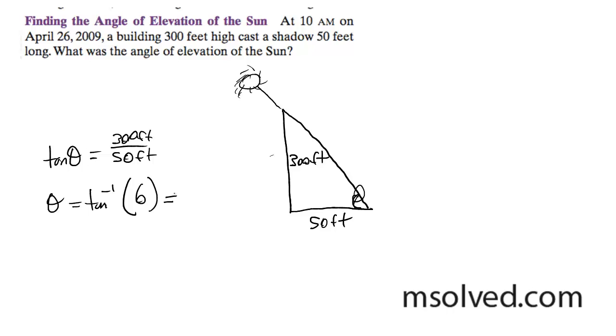Which gives us 80.5376, or simply just 80.5 degrees, is our elevation. That's how much of an angle we have here. So that's it.